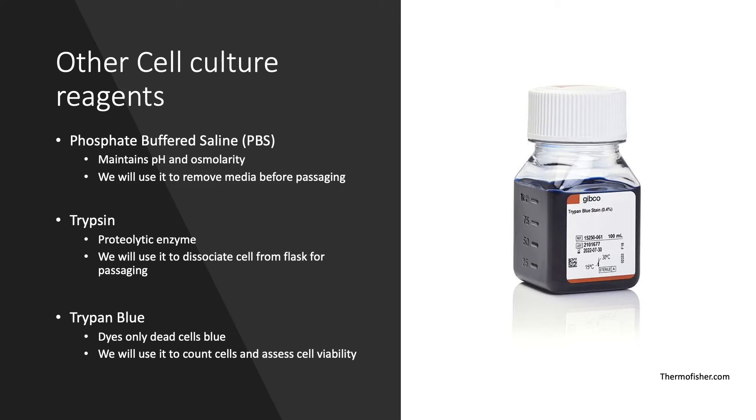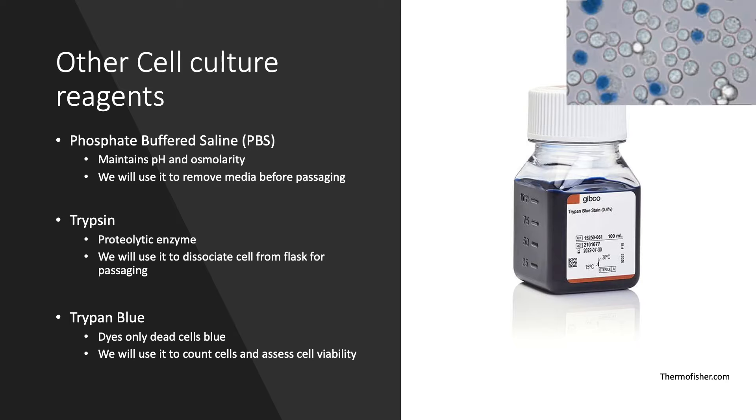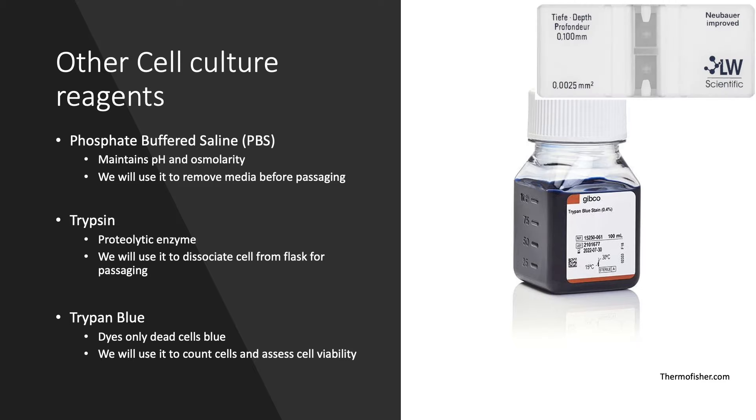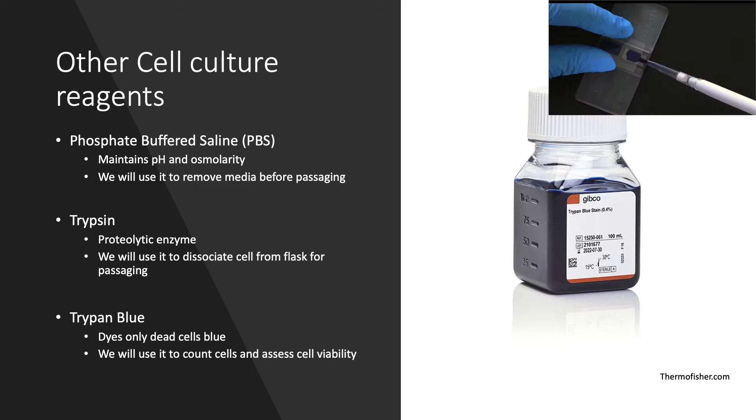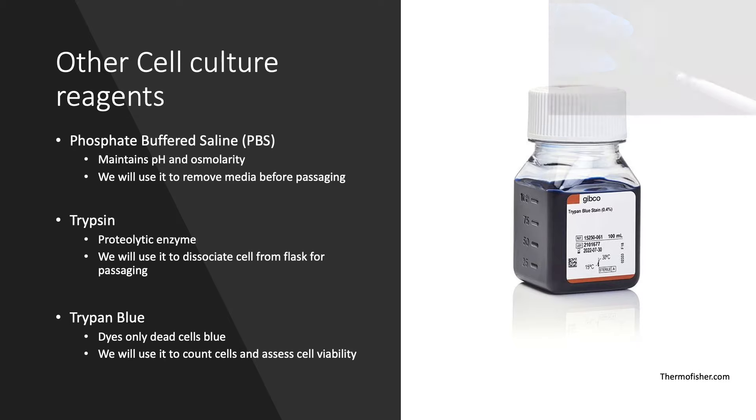Trypan blue helps us distinguish between dead cells and living cells by passing through the damaged membranes of dead cells. This is typically used alongside a hemocytometer, which is a glass counting chamber with a laser etched grid onto which a glass coverslip is mounted. A known volume of trypan blue with cells can then be loaded under the glass and counted.